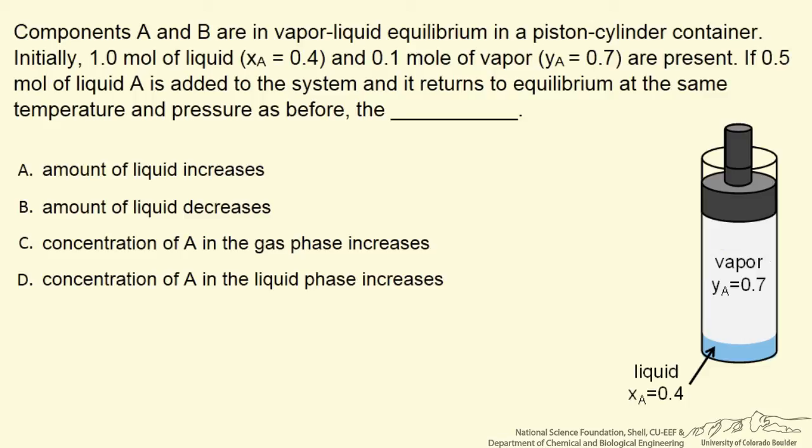And then after the system's at equilibrium, we add an additional 0.5 moles of liquid to the system and let it return to equilibrium, keeping the pressure constant because it's in a piston and cylinder, and keeping the temperature constant, it's in a constant temperature bath.